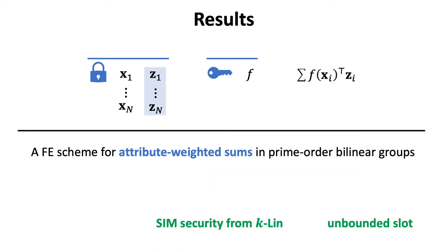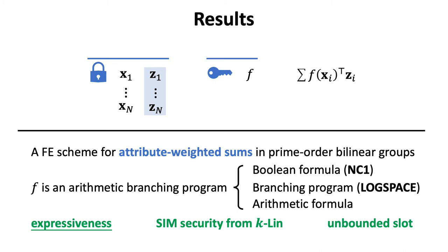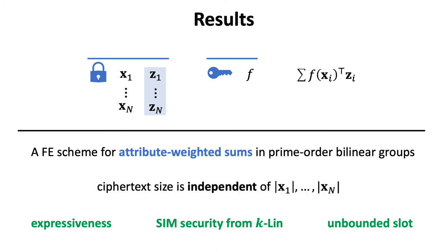Our main result is an FE scheme for attribute weighted sum with selective simulation-based security from the k-linear assumption in the prime order bilinear group. It also satisfies the unbounded slot requirement — that is, a secret key can be used to decrypt a ciphertext for any n. Our proposed scheme is expressive in the sense that it allows the function f, which defines the weight, to be an arithmetic branching program, covering many important function classes such as NC1 and log space. Besides that, our ciphertext size is independent of the size of public attribute xi.